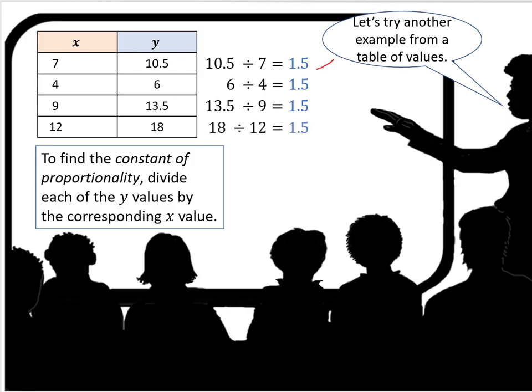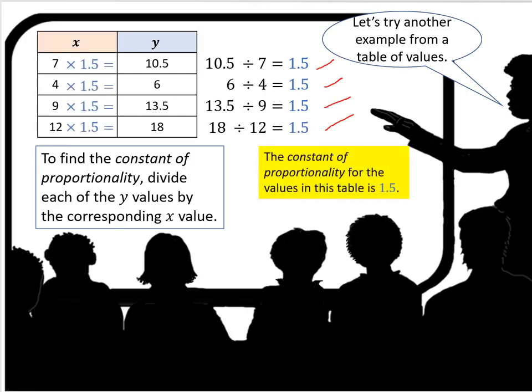And what you notice that's constant between all of them is 1.5. So the multiplier 1.5 is the constant of proportionality for the values in this table.